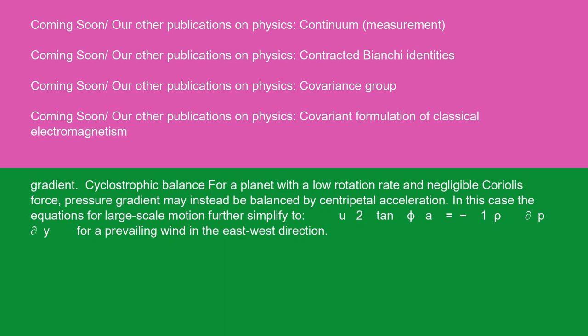Cyclostrophic balance: for a planet with a low rotation rate and negligible Coriolis force, pressure gradient may instead be balanced by centripetal acceleration. In this case, the equations for large-scale motion further simplify to: u² tan φ/a = -1/ρ ∂p/∂y, for a prevailing wind in the east-west direction.